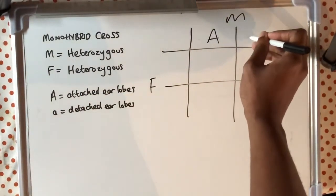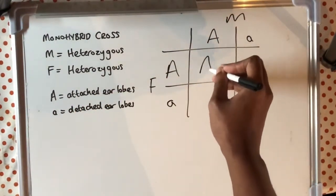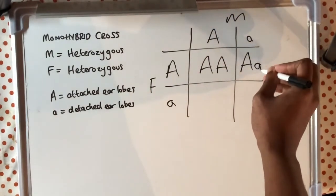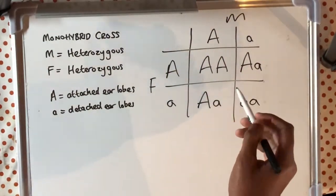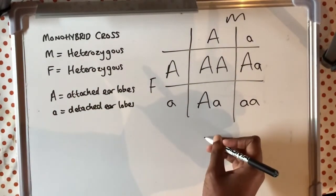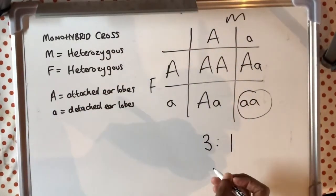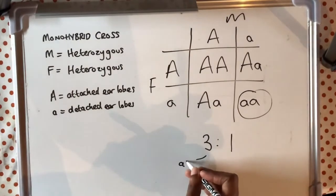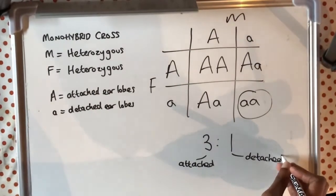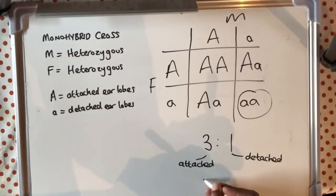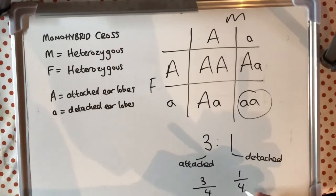If we look at the offspring now, we can see it is different to our previous example. One offspring is homozygous dominant, one is homozygous recessive, and two are heterozygous. But in terms of phenotype — attached ear lobes to detached ear lobes — the ratio is going to be 3 to 1. Because there is a total of 4, three offspring will have attached ear lobes and one will have detached ear lobes.